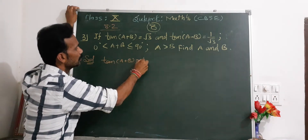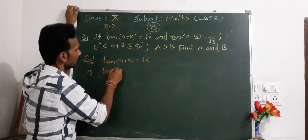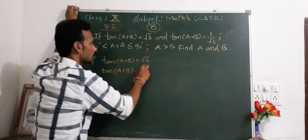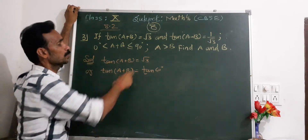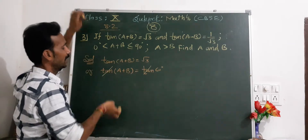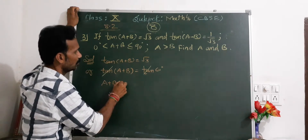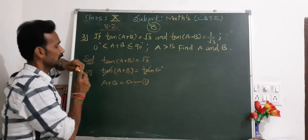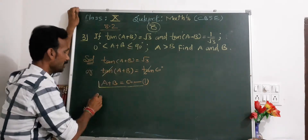Given tan(a+b) equals root 3. We know that tan(60°) equals root 3, so we can write tan(a+b) equals tan(60°). The tan cancels, giving us equation number one: a plus b equals 60 degrees.